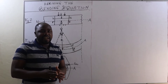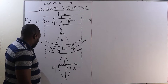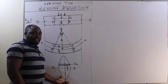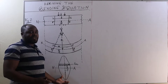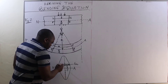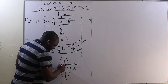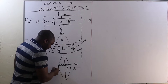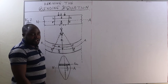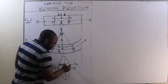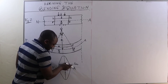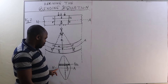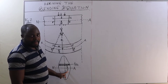Considering the transverse section of the beam, we are going to have a figure like this here. We are going to consider an elemental strip, which I have shaded in this form. Then, we have the neutral layer on the neutral axis. The area of this elemental strip, this shaded part, is DA, whose distance from the neutral axis is Y.